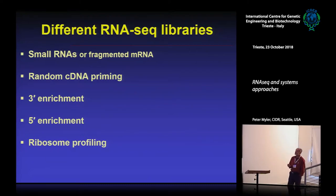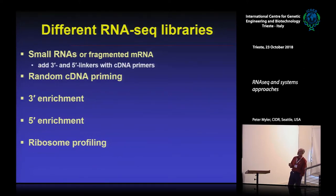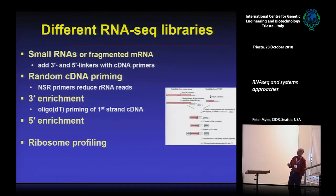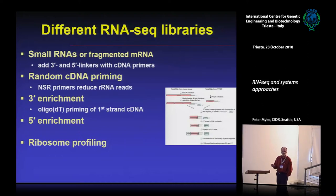You make different RNA-seq libraries for different purposes. If you want to look at small RNAs or fragmented messenger RNAs, you put linkers on the ends and make cDNA that way. If you want to look at RNA abundance, you might make random cDNA libraries or enrich by poly-A using oligo-dT to get rid of ribosomal RNAs, which is generally a good idea.